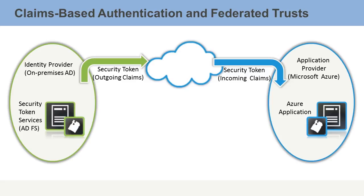That token can be sent out over the Internet and processed by a separate directory service. The security token, as an outgoing claim, is sent across the Internet. All federated trusts operate over the Internet.